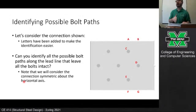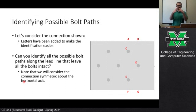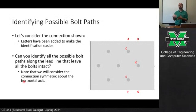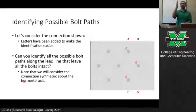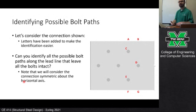A student asks why the middle of the member wouldn't be considered for failure. The short answer is it is considered. Right now we're considering gross and net area. Once we tackle shear lag — which we'll discuss Monday — we'll start doing tension member analysis. We'll consider both the gross section and the net section, compute a capacity for each, and take whichever governs.